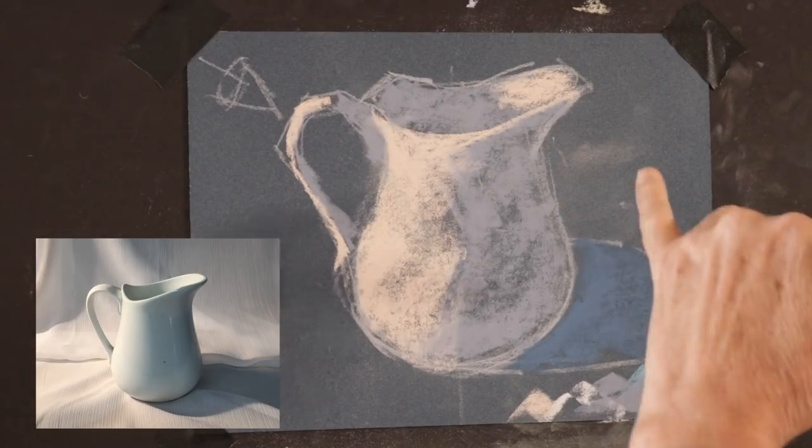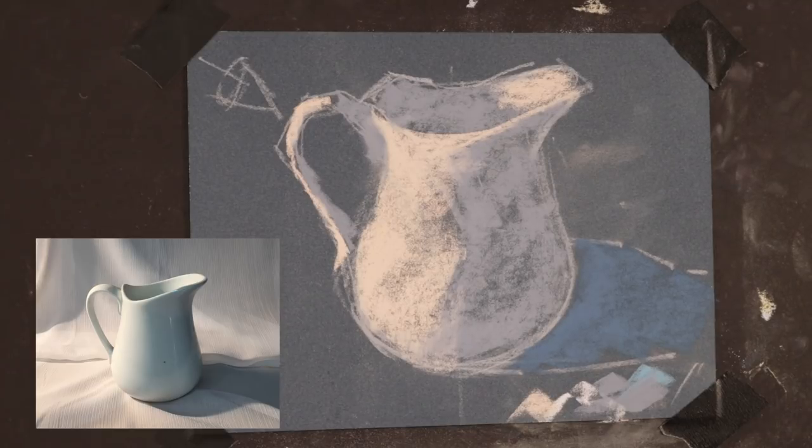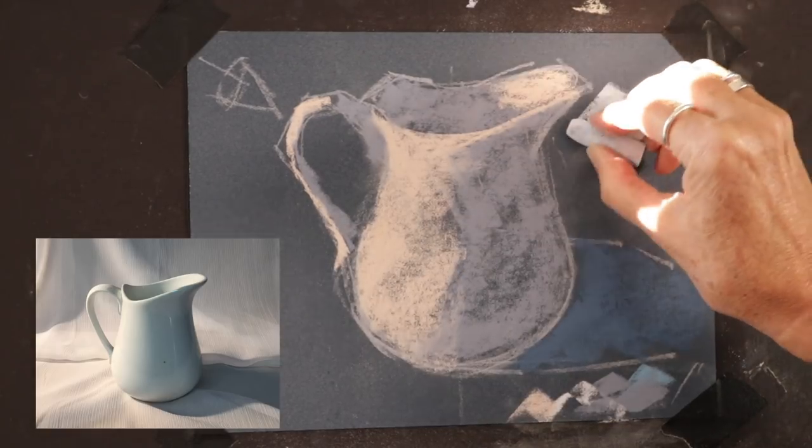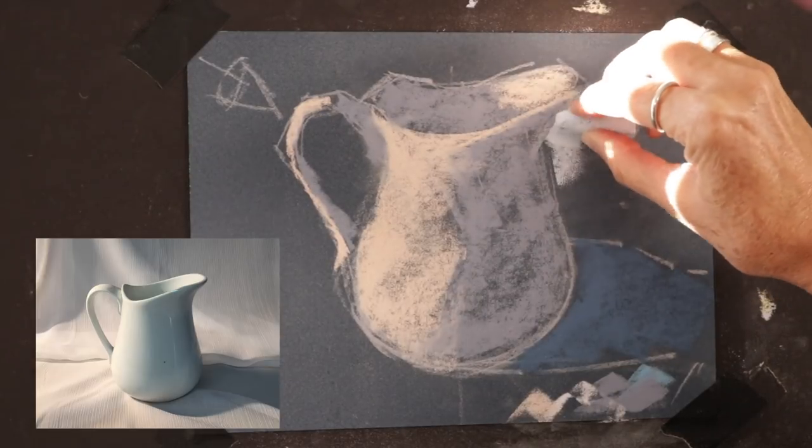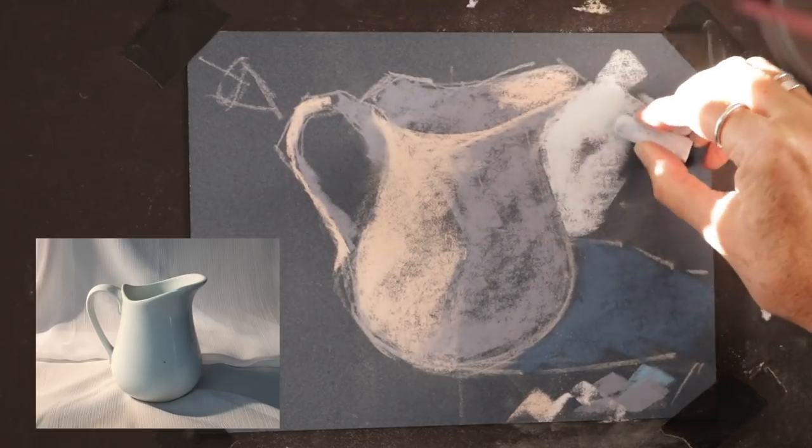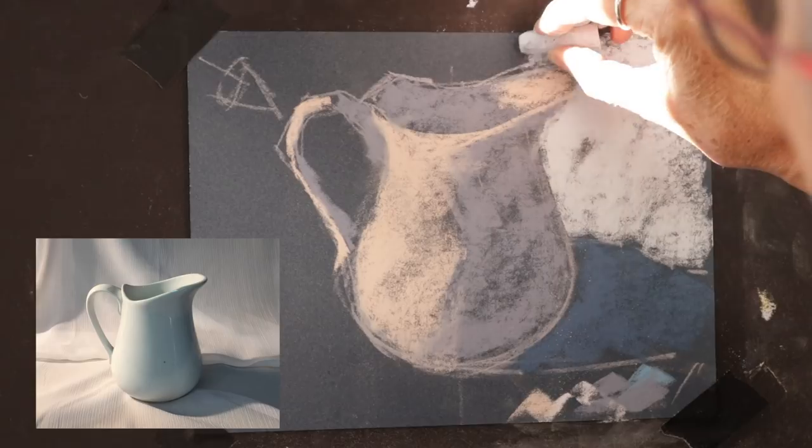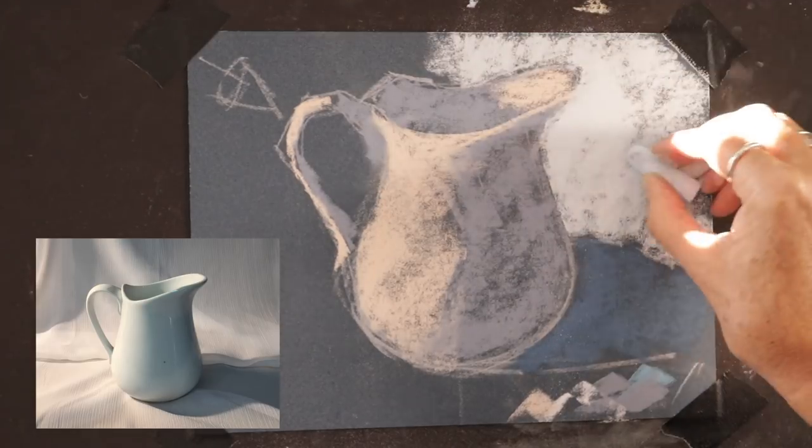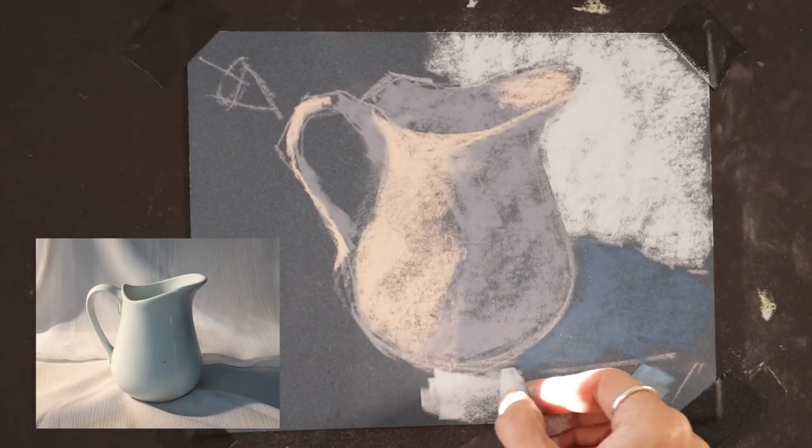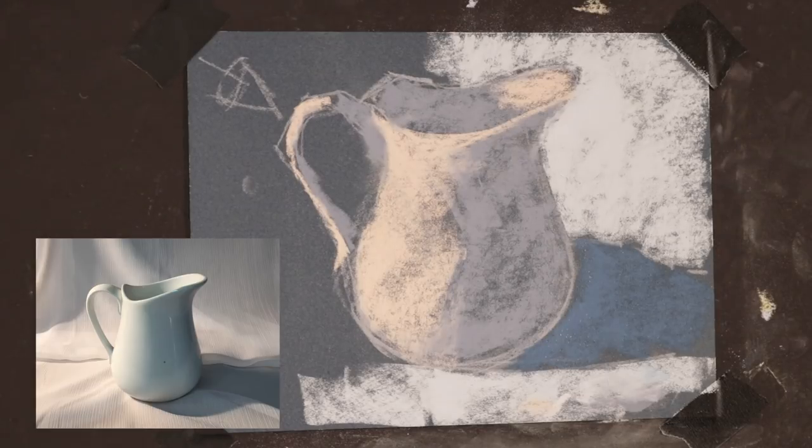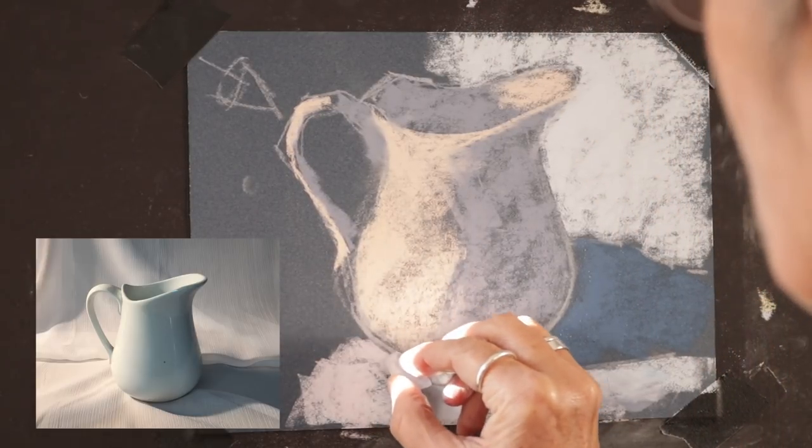I can already start to establish that rim there and same thing on the handle. I'm not going to worry too much about the drawing at this point; I can always restate. So now I have pretty firmly established a light side, a shadow side, and a cast shadow. Now I want to get something in for my background, a little bit cooler and darker on this side.